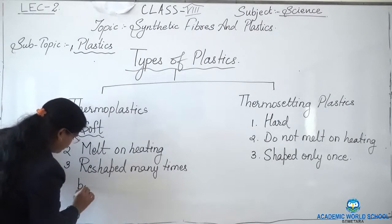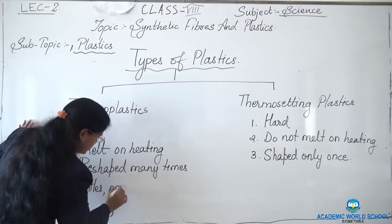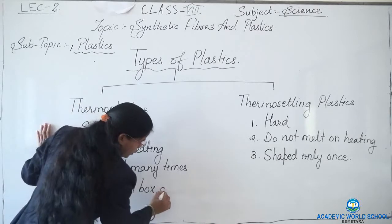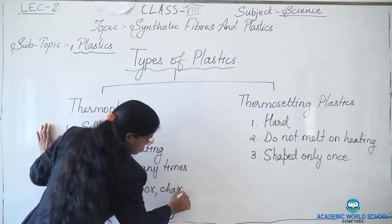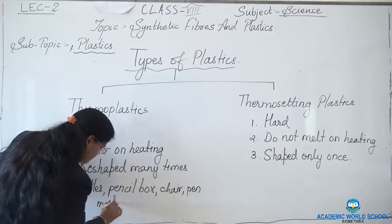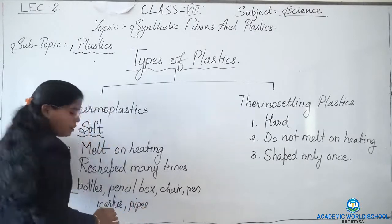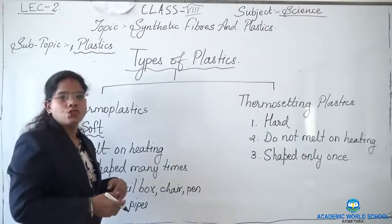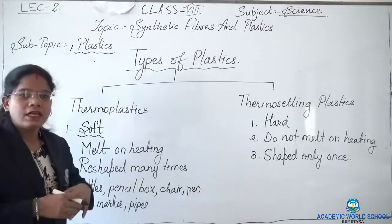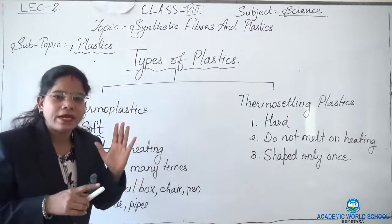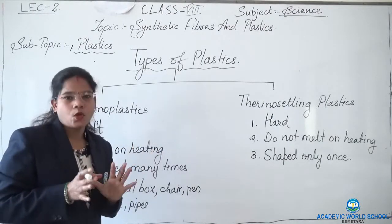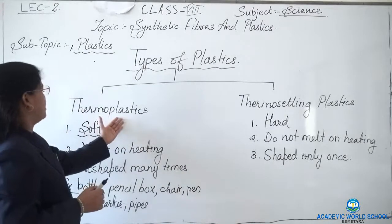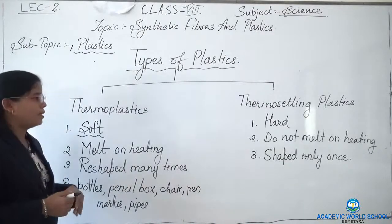Examples of thermoplastics are plastic bottles, pencil box, chair, pen, marker, and pipes. So many things are made up of thermoplastics. You can remember: if you think about heating an object and it will melt, then it belongs to the thermoplastic category. Thermoplastics are the plastics which melt on heating.